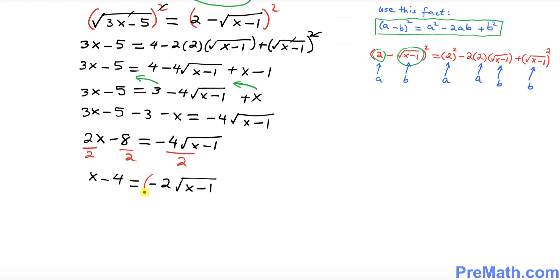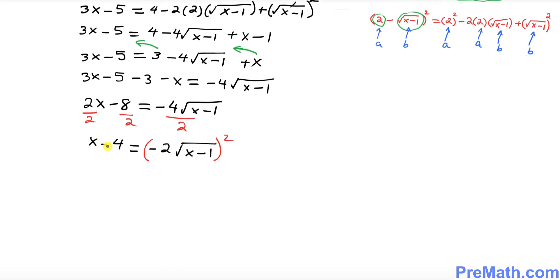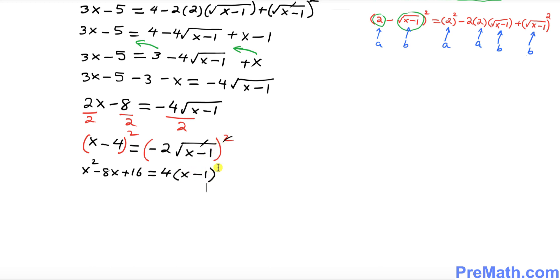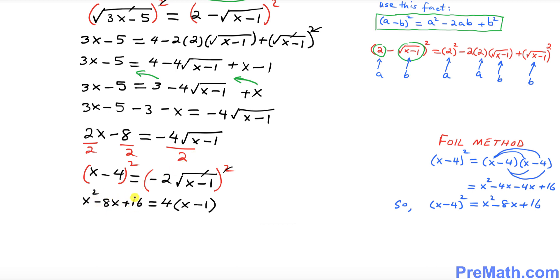The next step is to get rid of this square root by squaring both sides again. So (x minus 4) squared expands to x squared minus 8x plus 16, and on the right side negative 2 squared is 4, times (x minus 1) — since the square and square root undo each other.